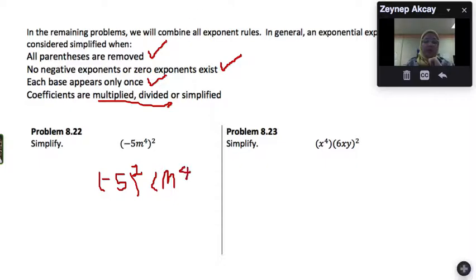Sorry, let me do something. So m to the fourth raised to the second power. Negative 5 squared is a positive number, positive 25.